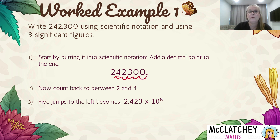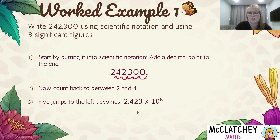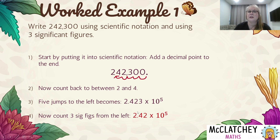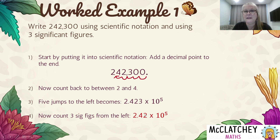Now we do the rounding part — three significant figures. Counting from left to right, I have four significant figures in 2.423 and I only want three, so the last digit gets chopped off. It becomes 2.42 times 10 to the power of 5. The significant figures rounding applies to the decimal part: 2.42 has three significant figures.